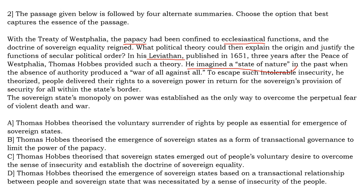The sovereign state's monopoly on power was established as the only way to overcome the perpetual fear of violent death and war. In simple terms: after the Treaty of Westphalia, the pope's power was reduced, people became sovereign, but sovereign equality led to complete anarchy and insecurity. To escape that, people gave up their sovereign power to a government or political system that would ensure safety and security in return for the complete power given to them.